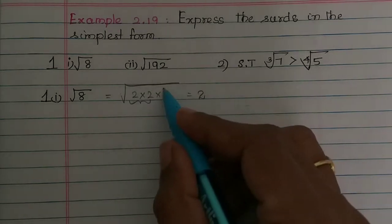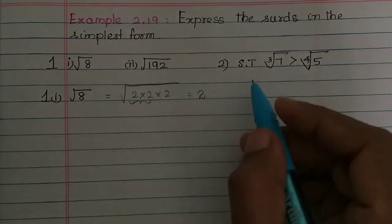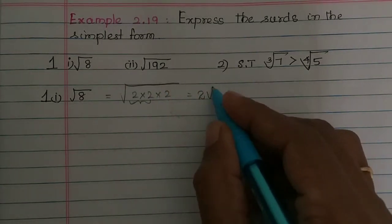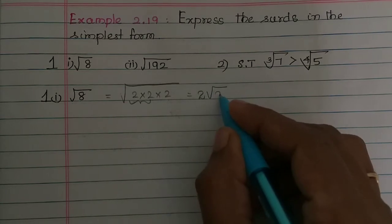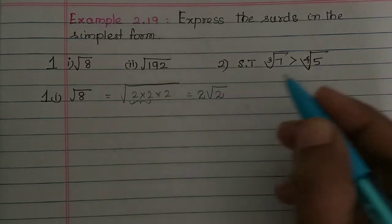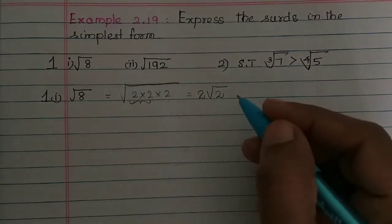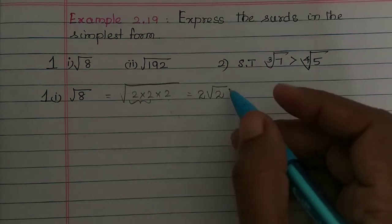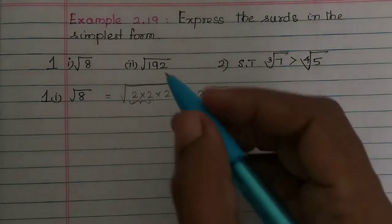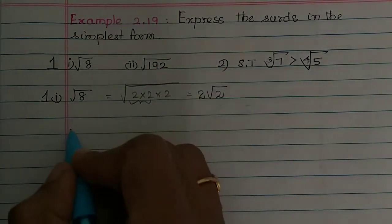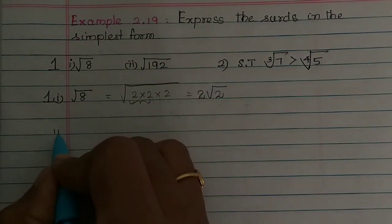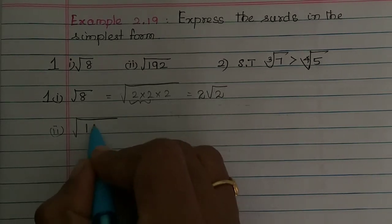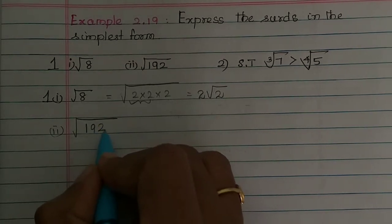Out of two 2s, we can take one number outside — so this is the simplest form. Then we can have the root of 192. What do we have to do? Square root of 192. This is the simplest form; what do we have to do? 2 root — so now we can have the second sum: the square root of 192.